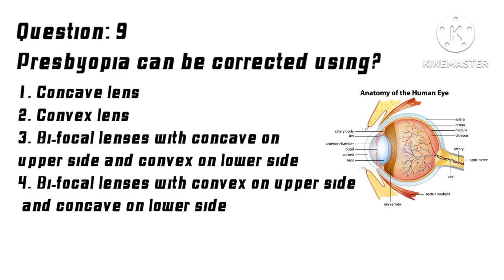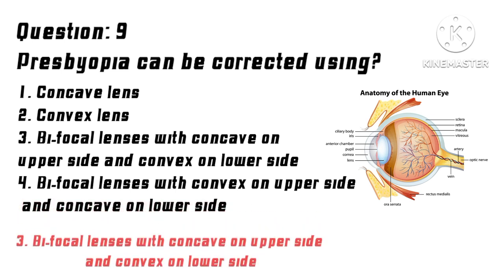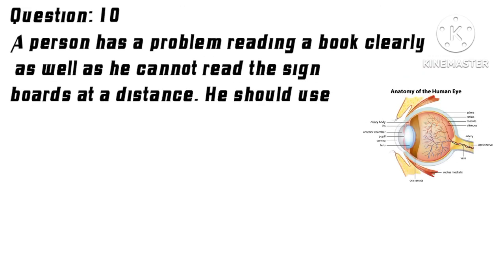Question 9: Presbyopia can be corrected using? Options: 1. Concave lens, 2. Convex lens, 3. Bifocal lenses with concave on upper side and convex on lower side, 4. Bifocal lenses with convex on upper side and concave on lower side. Correct answer: 3. Bifocal lenses with concave on upper side and convex on lower side.